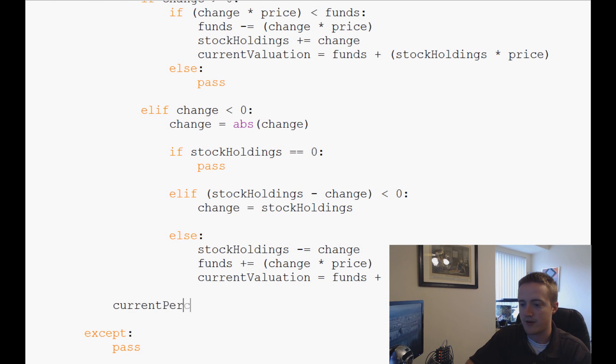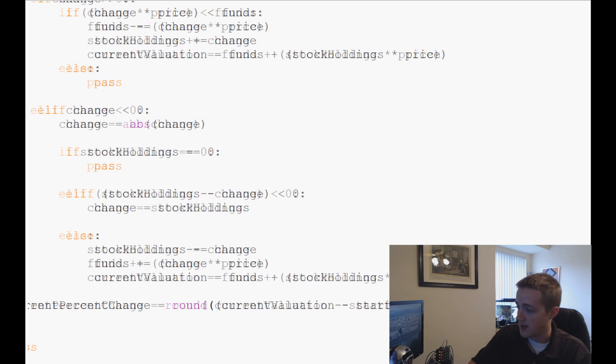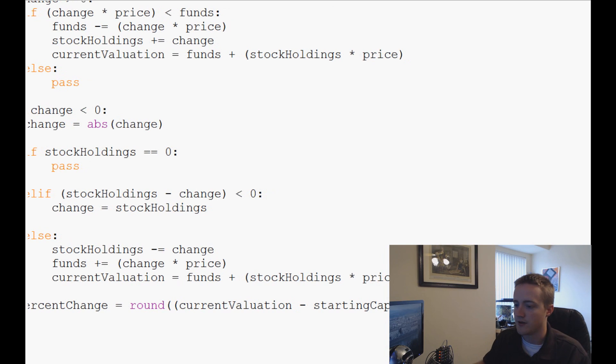We're going to say current percent change. And current percent change is going to equal, we want to go ahead and round this a little bit, and this is going to be round the current valuation minus starting capital. And then we want to divide it by starting capital. So new minus the old divided by the old times 100. So divide it by starting capital times 100.